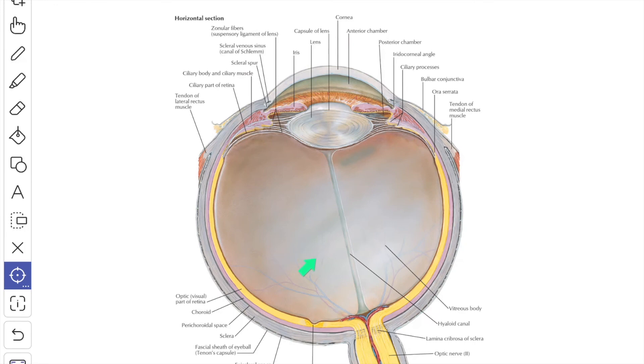Next, we will see about the vitreous body. It is a transparent gelatinous mass which fills up the posterior four-fifths of the eyeball. It is composed of 99% water with some salts and contains a meshwork of collagen fibrils and a mucopolysaccharide, the hyaluronic acid.